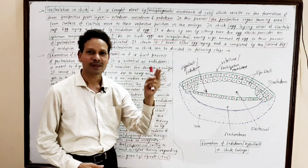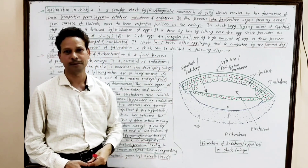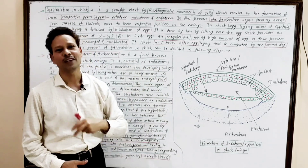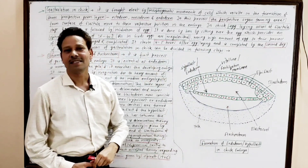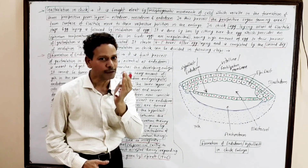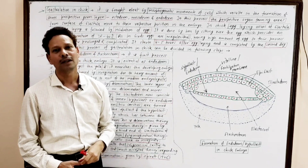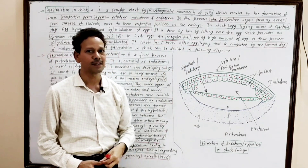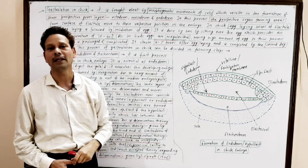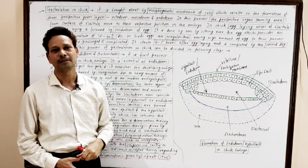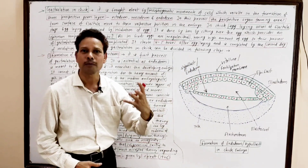As we know, egg laying occurs at the blastula stage. In birds, the blastula is discoblastula. Gastrulation involves the specific morphogenetic movements of cells, that is, the specific movements of organ-forming areas — the prospective areas which move to their specific positions to give rise to definite organs of the body. It means gastrulation is the process essential for the formation of organs.